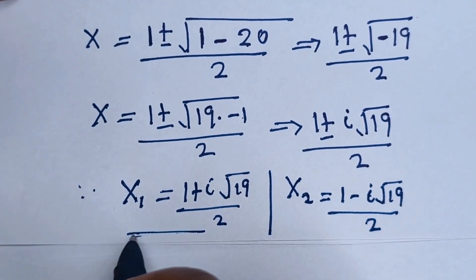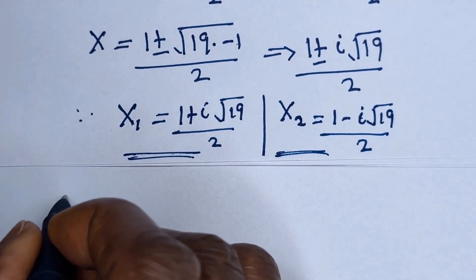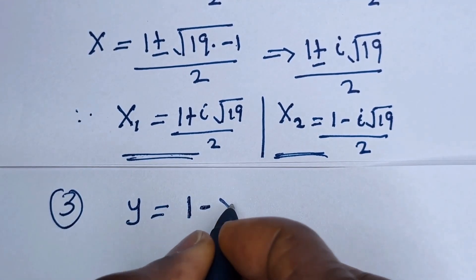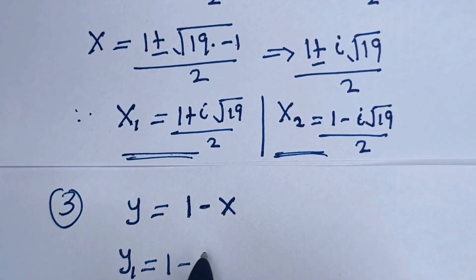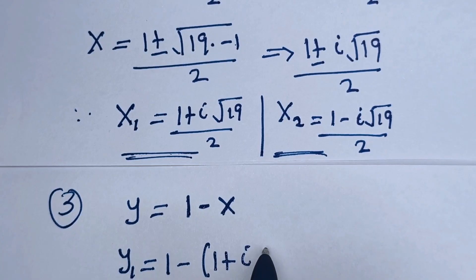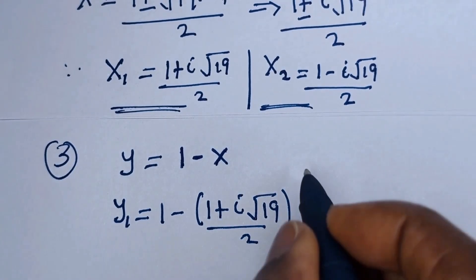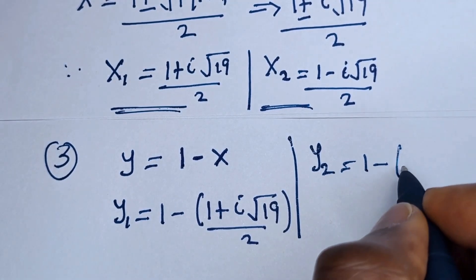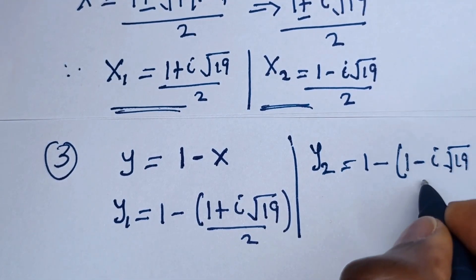We've gotten the values of S1 and S2. Let us now solve for Y1 and Y2. From equation 3, Y is equal to 1 minus S. Then Y1 is equal to 1 minus S1, which is 1 minus (1 plus i√19 over 2). And Y2 is equal to 1 minus (1 minus i√19 over 2).